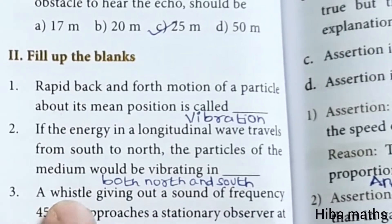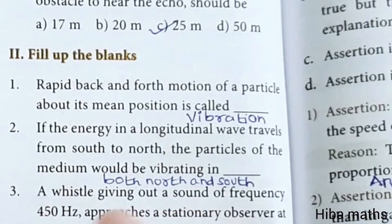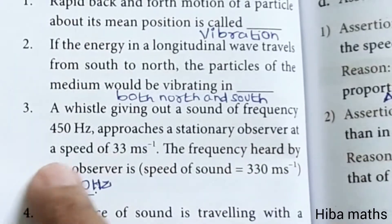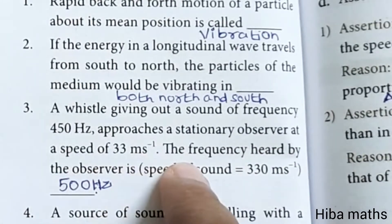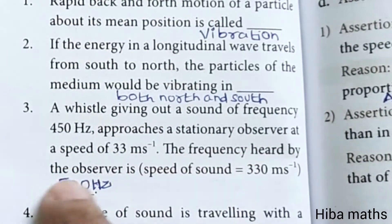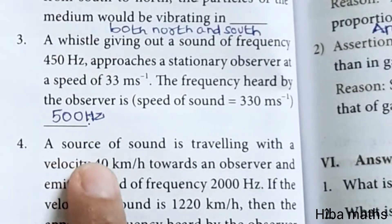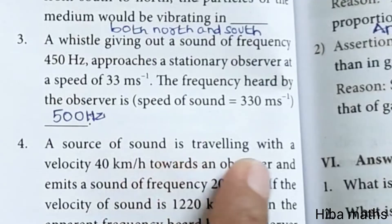A whistle giving out a sound of frequency 450 hertz approaches a stationary observer at a speed of 33 meter per second. The frequency heard by the observer is 500 hertz.